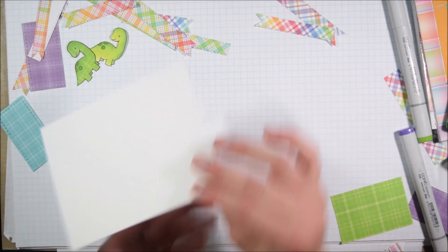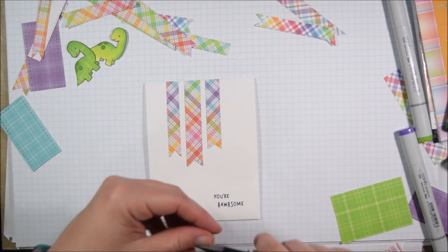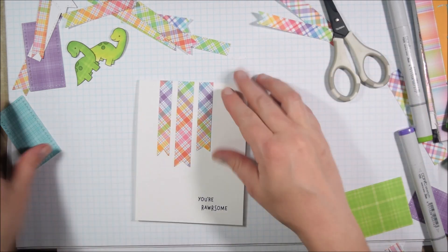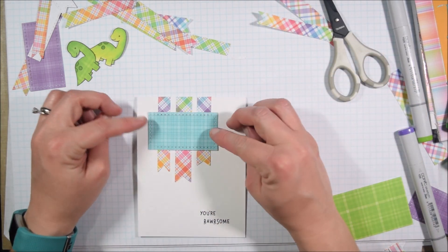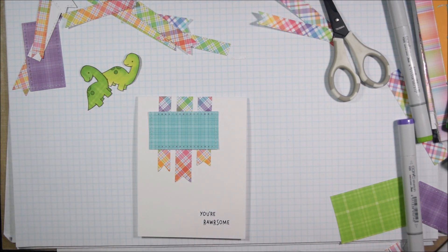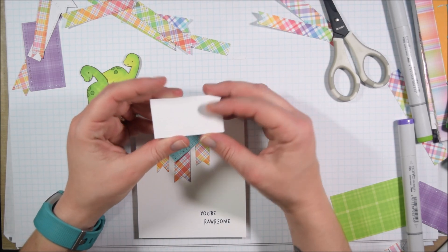Since my rectangle doesn't have any adhesive on it yet, I put adhesive on my banners and kind of arranged them underneath where it would be, where I thought it would make sense. Then I decided to make mine all different varying lengths. I forget if that's what the sketch looks like, but I wanted to give things a little bit of dimension.